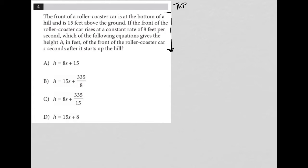So the question says the front of a roller coaster car is at the bottom of a hill and is 15 feet above the ground. Okay, so this is not just a translate word problem question. This is also a plug in picture question because we just read something that was very visual. It's a visual description.